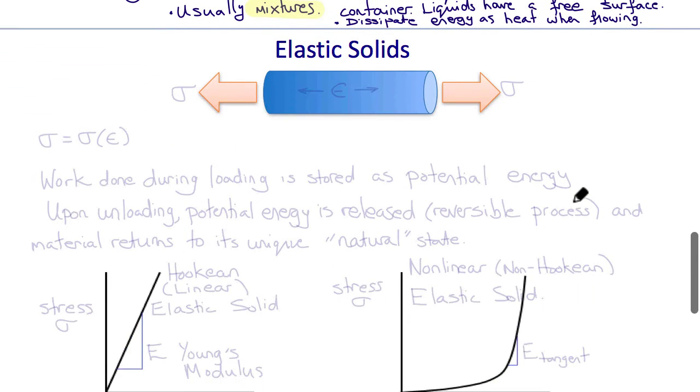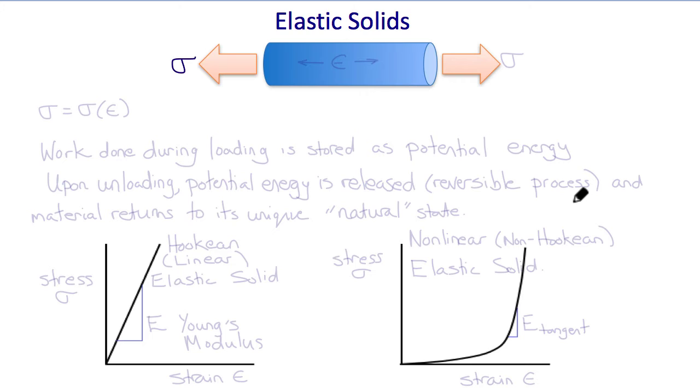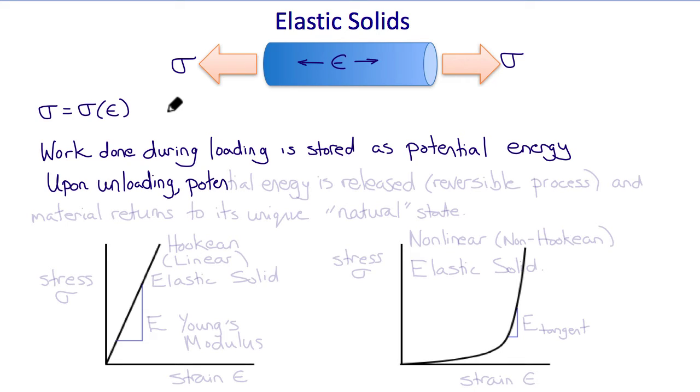So one of the commonest constitutive models is the elastic solid. Let's consider again our uniaxial sample subjected to normal stress sigma, resulting in strain epsilon. In an elastic solid, the stress is a function of the strain and only the strain. So sigma is a function of epsilon. The work done during loading is stored as potential energy. And upon unloading, the potential energy is released in a reversible process and the material returns to its original, unique, natural state.